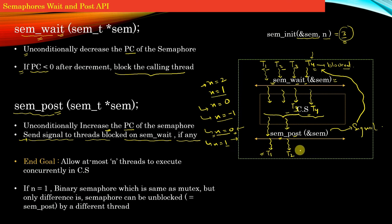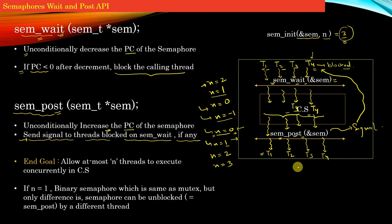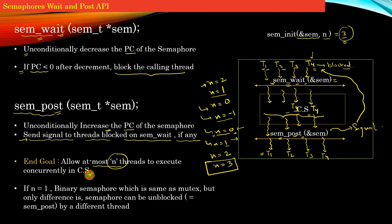Similarly, t3 and t4 also complete their work in the critical section and execute sem_post one by one. The value of n is incremented from 1 to 2, then from 2 to 3. Both threads exit without generating any signals, since no thread is in the blocked state on sem_wait. The semaphore counter comes back to its original value of 3. Through this example, we can see that the semaphore allowed at most n threads — never more than 3 — to execute in the critical section.